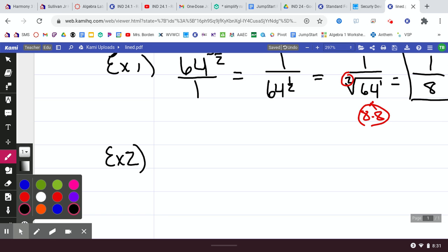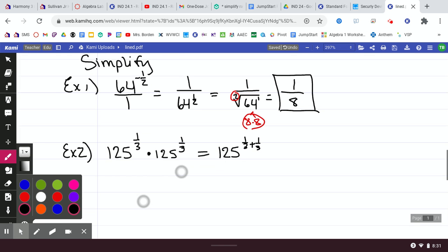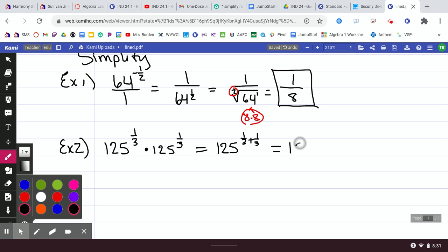Now, we're going to move on to multiplying. So, we've got 125 raised to the 1 third times 125 raised to the 1 third. We have like bases. So, when you have like bases, you simply add the exponents. So, if you have a like base of 125, it stays your base. And then you're going to add 1 third plus 1 third. So, that is going to equal 125 to the 2 thirds.